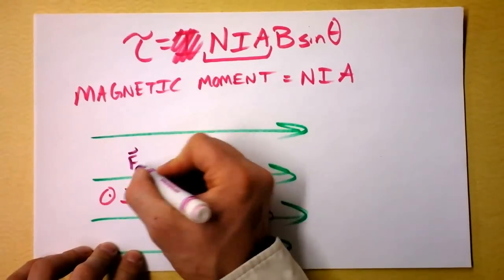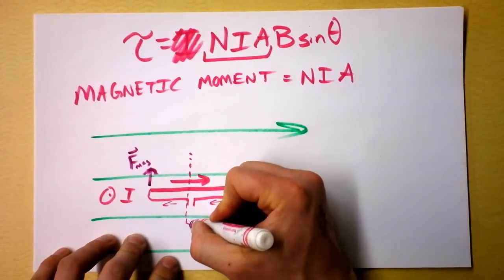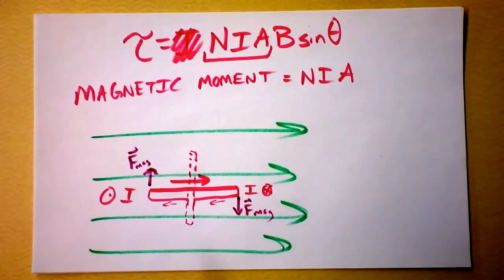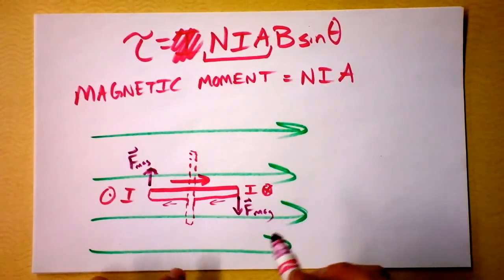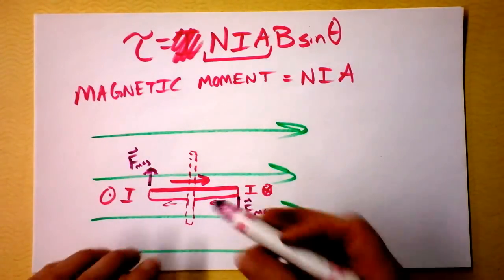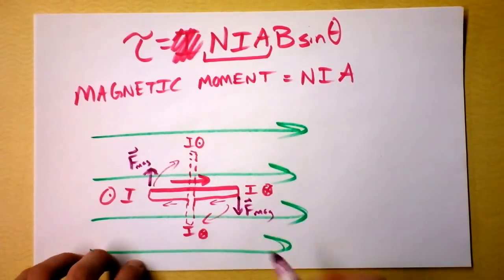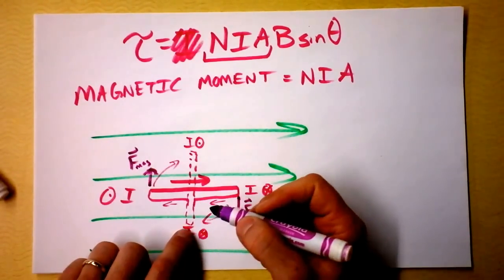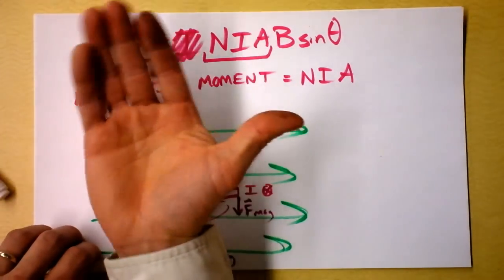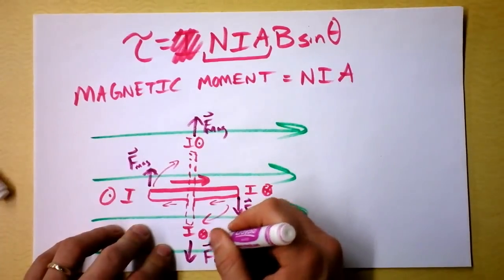As the loop gradually spins to a new orientation due to the torque, I've got current going into and out of the page, and the magnetic field is still in that direction — I just did a top view. At this new instant, the current is going into the page and the magnetic field is that way, so the force is simply outward. And if this current is going up and the magnetic field is that direction, this force is also outward. Those forces are not a torque at all.